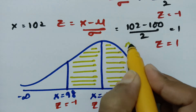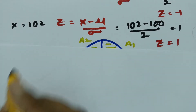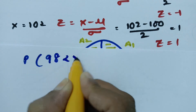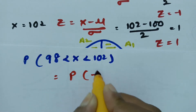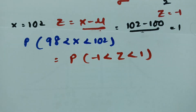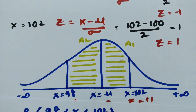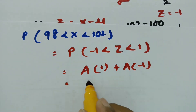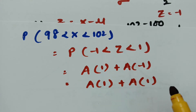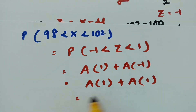This region consists of area A1 (from z = 0 to z = −1) and area A2 (from z = 0 to z = +1). So the total required probability is P(−1 < z < +1) = A1 + A2. By symmetry of the normal curve, A1 = A2, so the total area = 2 × A1.